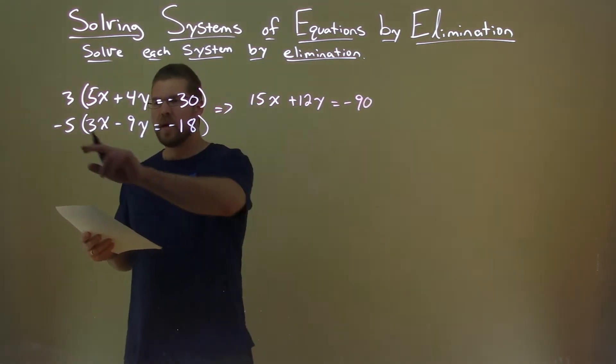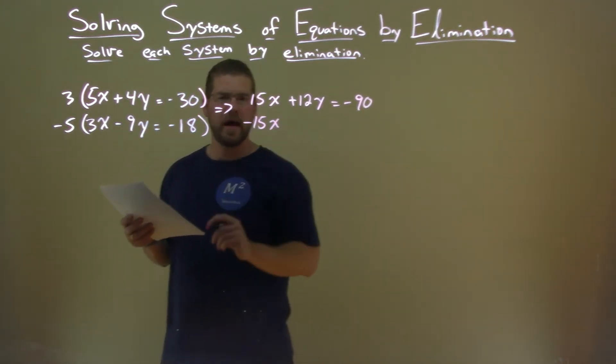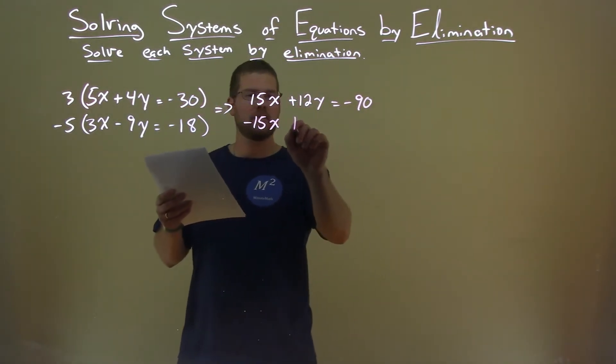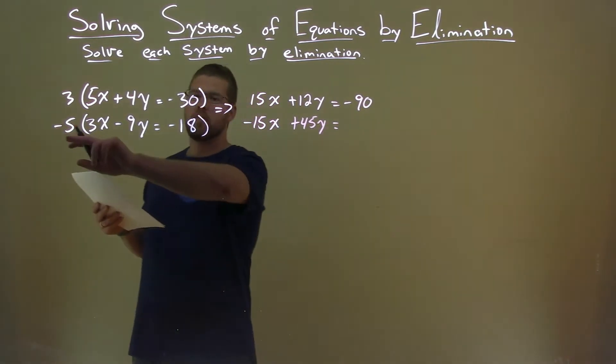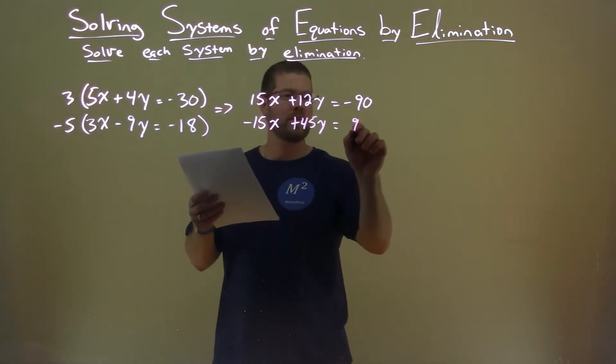Second equation, negative 5 times 3x is negative 15x. Negative 5 times negative 9y is positive 45y. Negative 5 times negative 18 is positive 90.